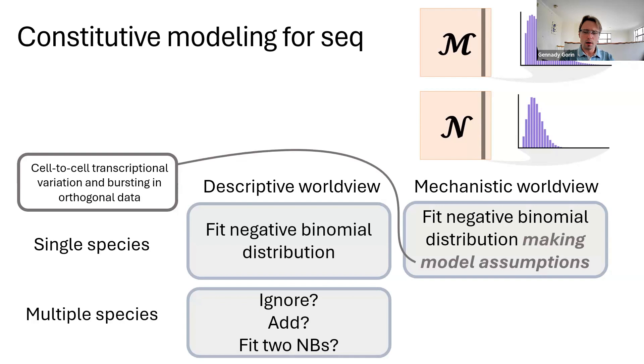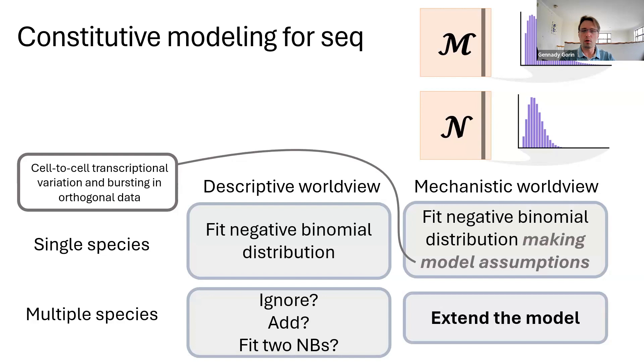On the other hand, the solution in the mechanistic worldview is almost trivial and obvious. We had to define a model to motivate the negative binomial in the first place. To come up with the right distribution here, we simply have to extend the model to involve the relationship between nascent and mature RNA. And we can demonstrate this with BiVI, a neural framework I designed for the analysis of sequencing data.